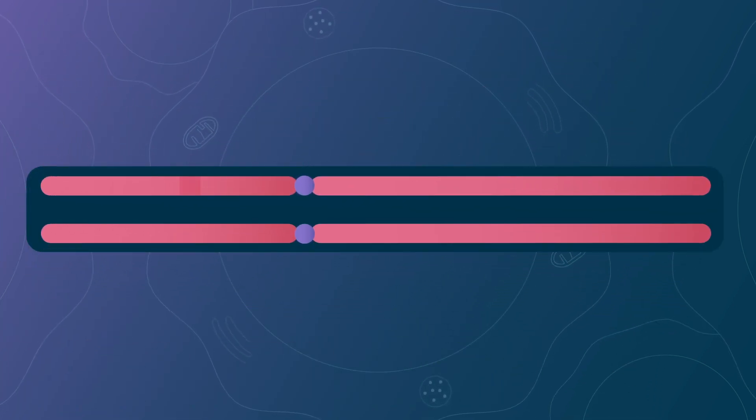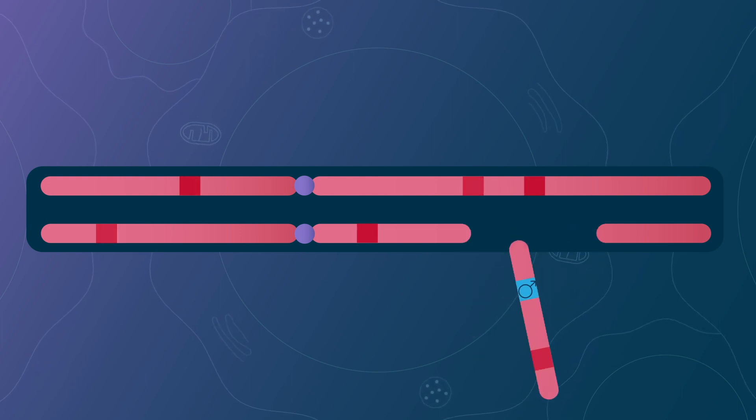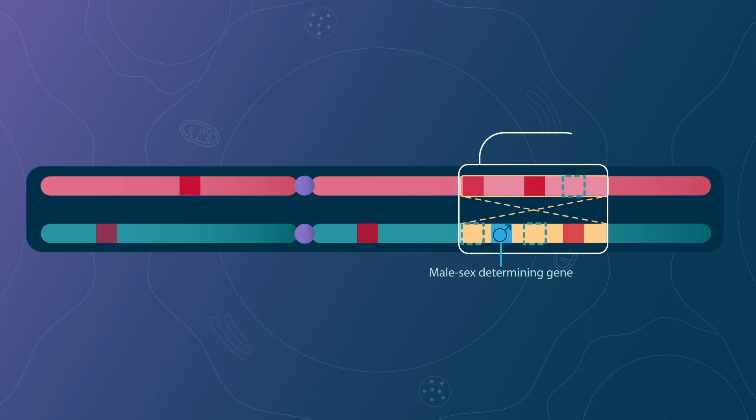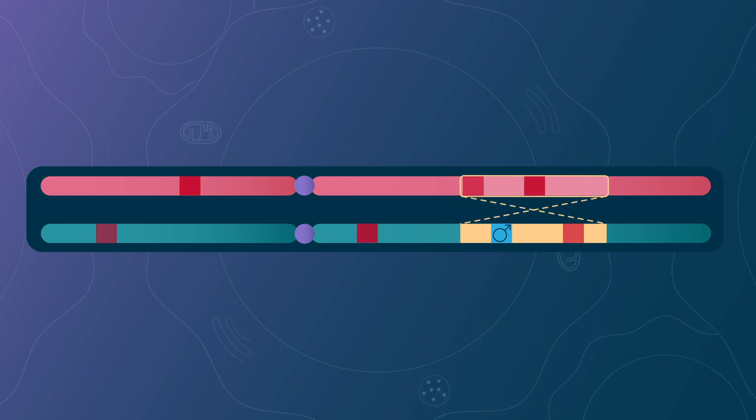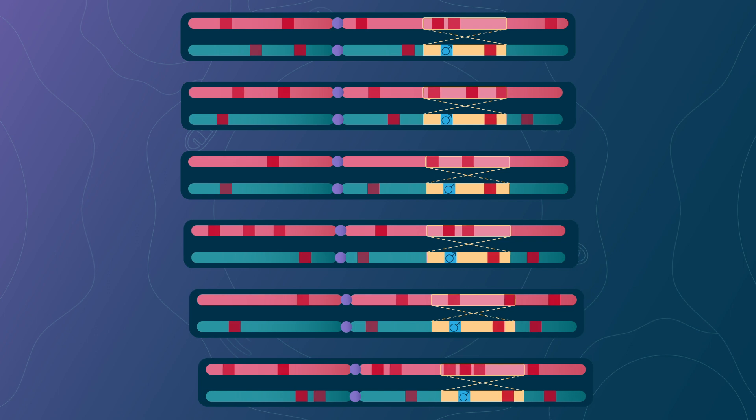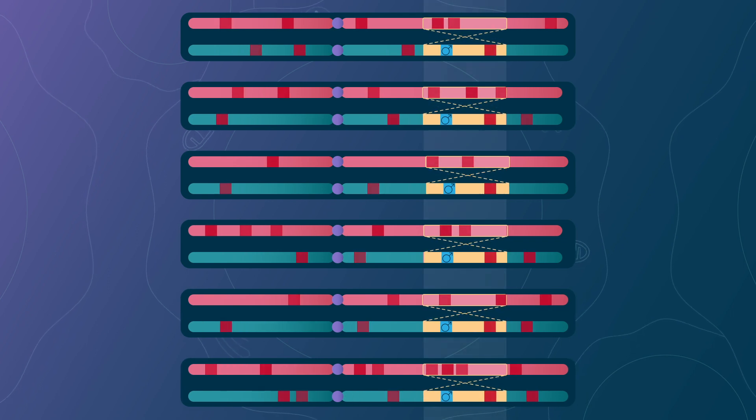Except, if by chance, the inversion with few deleterious mutations also captures the male determining gene on the Y chromosome. In this case, the inversion will never be in two copies in the same individual, because males have a single Y chromosome. The inversion will thus always have intact gene copies sheltering it, the ones on the X chromosome. Such an inversion will therefore always be beneficial, and will reach fixation on the Y chromosome.